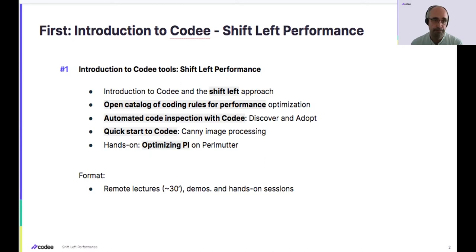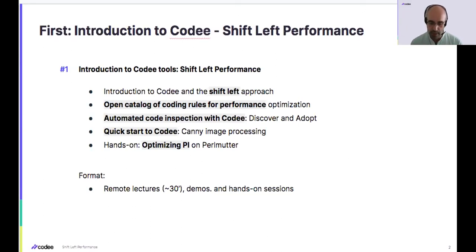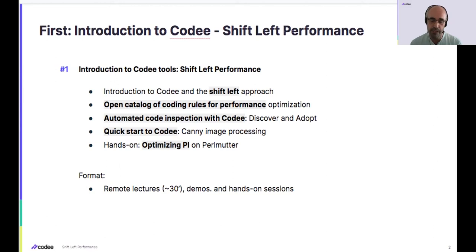This open catalog is part of the vision of Appentra to keep it public on the website. First pillar: the software to automate code inspection of real applications. Second pillar: the knowledge, written down in simple rules that from the novice developer to the expert developer can really understand. We can have a developer expert in optimizing for memory but a novice for GPUs, or the other way around. Having this open catalog of knowledge is really interesting both for experts and for newcomers to performance optimization techniques.